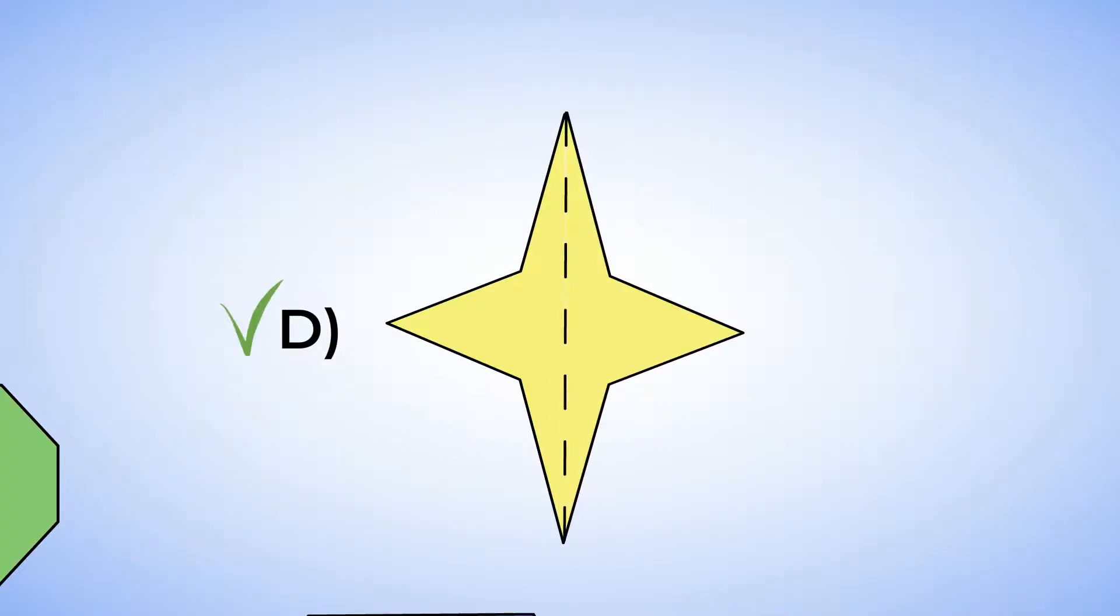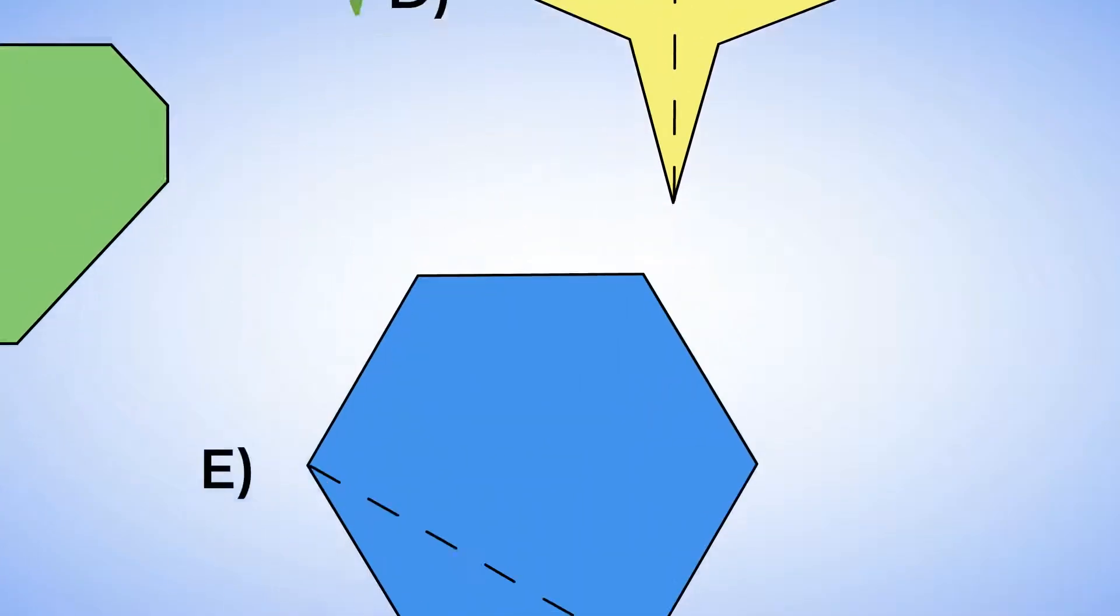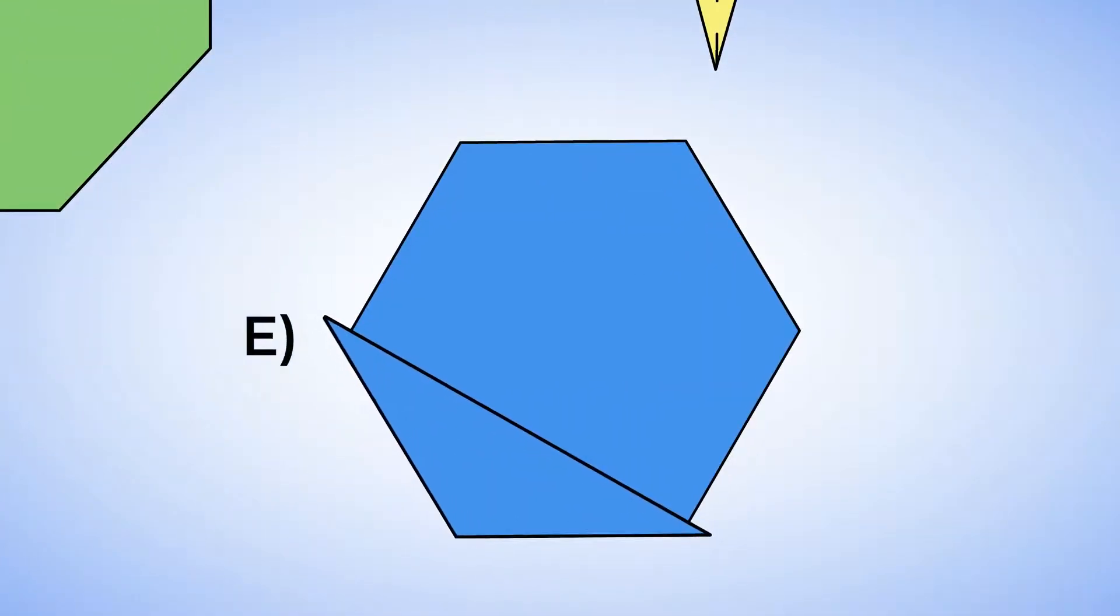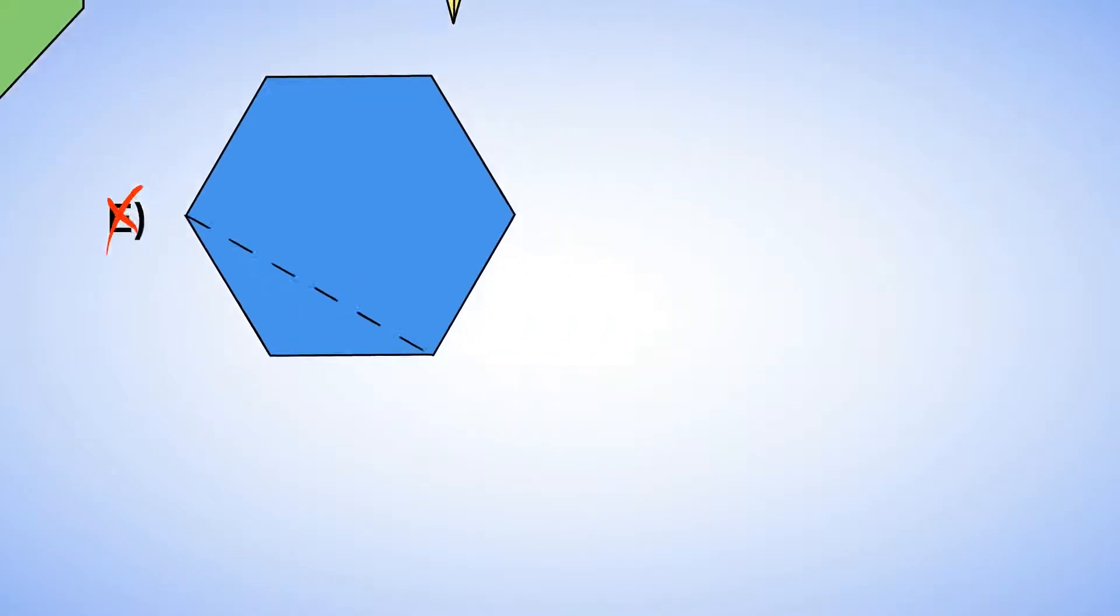And last but not least, shape E. One side of the shape looks like a triangle, and the other side is not a triangle, and so they're not identical at all. This is not a line of symmetry. But wait a sec.